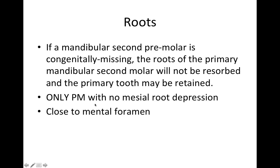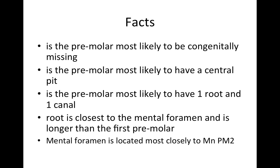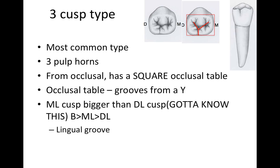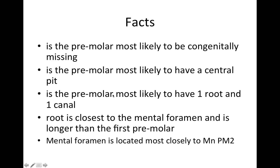Regarding roots: if a mandibular second premolar is congenitally missing, the roots of the primary mandibular second molar will not be resorbed and the primary tooth may be retained. It's the only premolar with no mesial root depression, and it's very close to the mental foramen. Key facts: it's the premolar most likely to be congenitally missing, most likely to have a central pit, and most likely to have one root and one canal. This root is closest to the mental foramen and is longer than the first premolar.